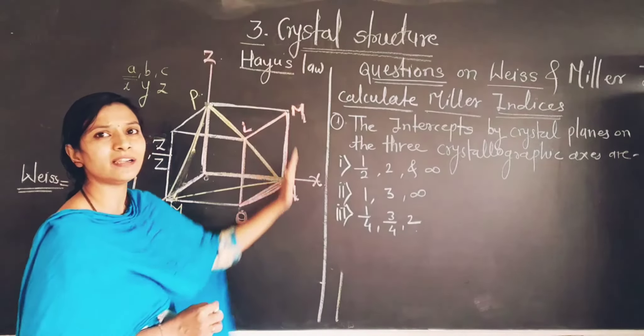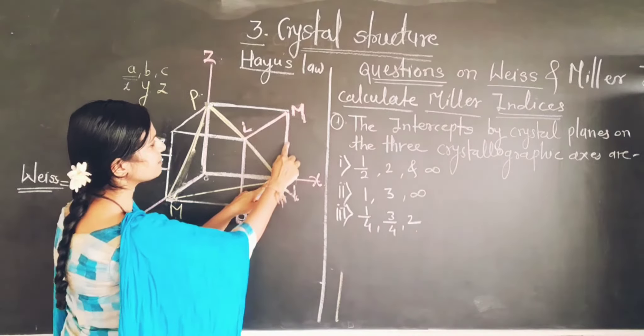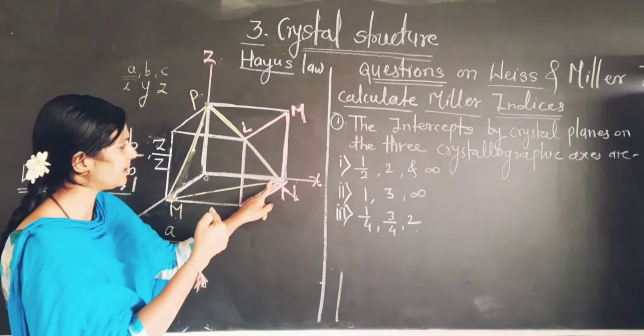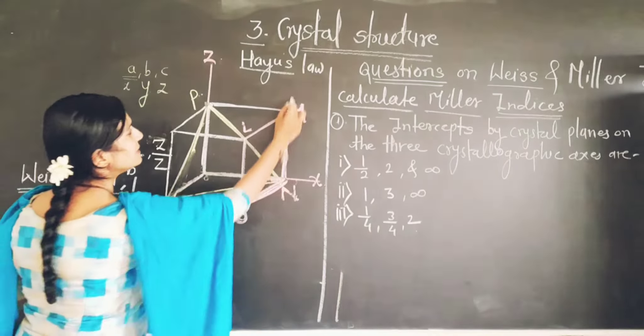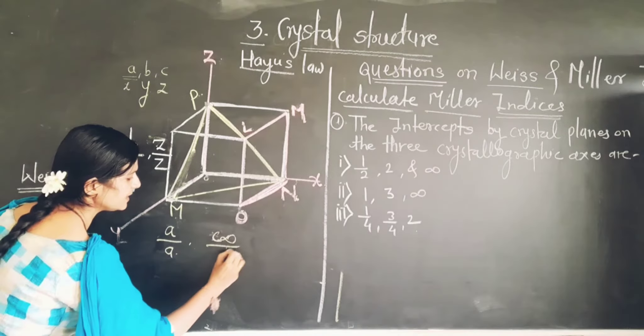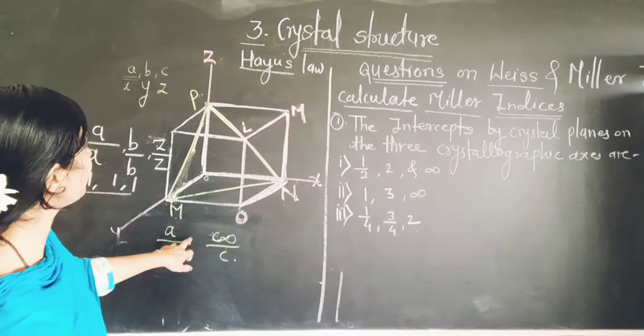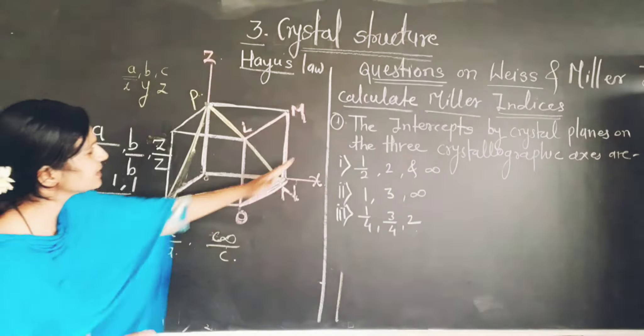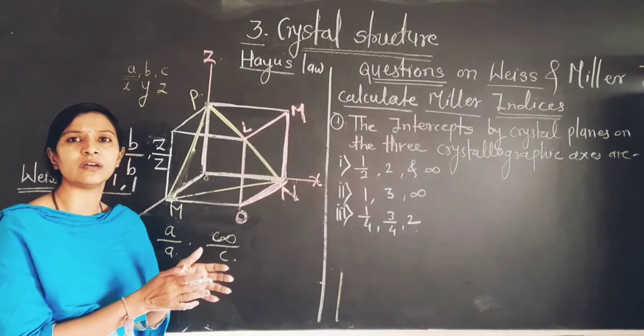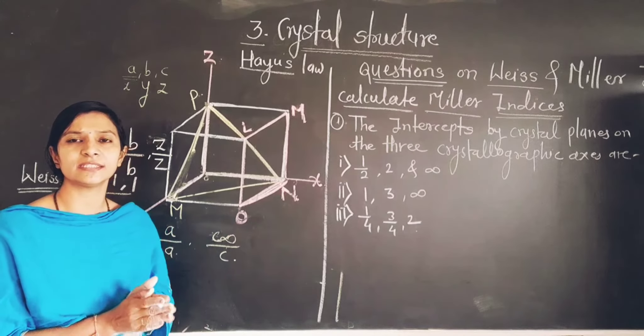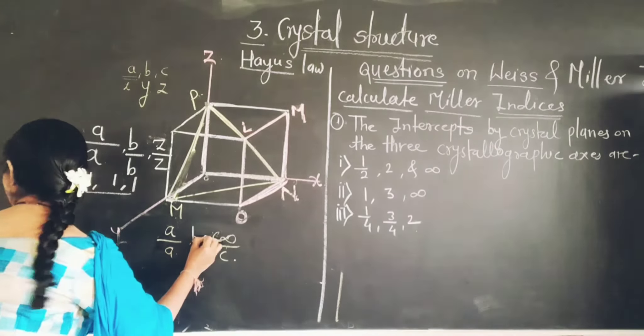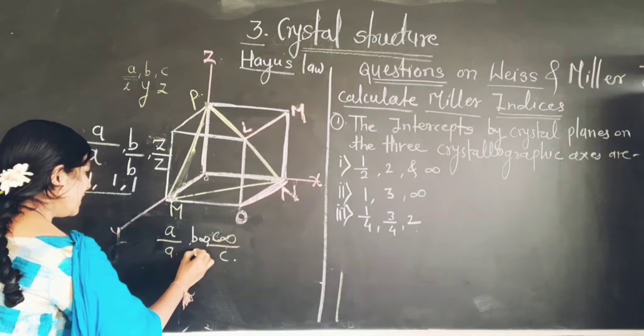Now look forward - this plane is parallel to the Z axis. No any type of intercept occurs here, and therefore when we consider the Z axis, we will be getting the index infinity by C. And when we look towards the Y axis, this plane is also parallel to the Y axis. And when the plane is parallel to any axis, that index is denoted by infinity. Therefore, this number is to be infinity by B.